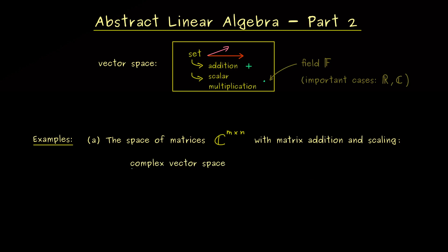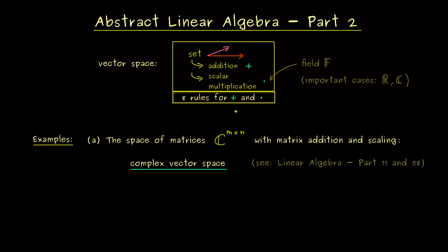We say it's a complex vector space because the field for scaling is given by the complex numbers. In order to prove that this is a vector space, you just have to check the 8 rules listed in the last video. They just state the facts we expect from an addition and a scalar multiplication. If you want to see more details for the matrices, you can check out our linear algebra series with part 11 and part 58.